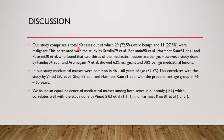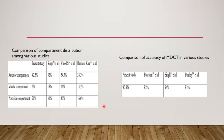Discussion: our study comprises a total of 40 cases, out of which 29 were benign and 11 were malignant. This correlated with studies by Stroll et al., Benjamin et al., and Hermit Kaur et al. Mediastinal masses were common in 46 to 60 years of age, correlating with Vinod et al., Singh et al., and Hermit et al. We found an equal incidence among both sexes, and the anterior compartment was most common, followed by posterior and middle compartment. The accuracy of MDCT was about 91%, consistent with various other studies.